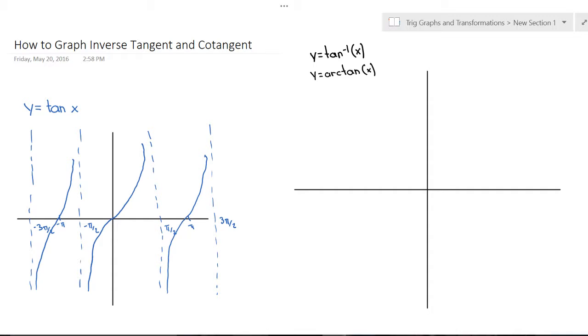As you know, for an inverse, what must be true is it has to be a one-to-one function, the original function. And that means that it must pass the horizontal line test, which is the simple way to think about it.